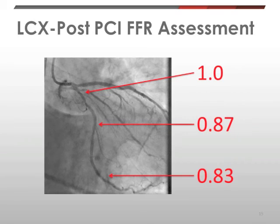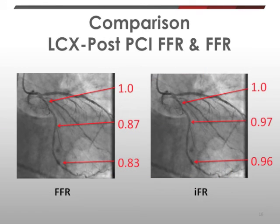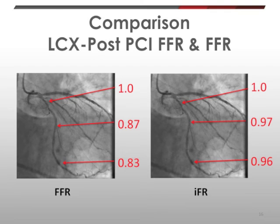We then repeated the same with FFR. The FFR between the lesions was 0.87, and distal to the most distal lesion was 0.83. Using both IFR and FFR, you can see that implanting a stent at the correct location — where the physiology is most profoundly affected — leads to a considerable improvement in physiology, with both indexes showing significant improvement.